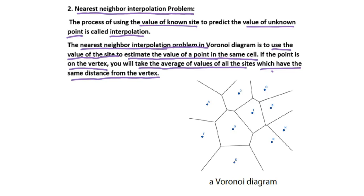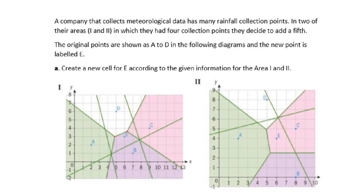In this class we will talk about this application of the Voronoi diagram. Let's go to example one. A company has many rainfall collection points in two of their areas — area one and area two. For each area they already have four collection points, and they want to add a fifth. The original points are shown as A to D in the following diagrams. A new point is labeled E. Create a new cell for E according to the given information for area one and two.